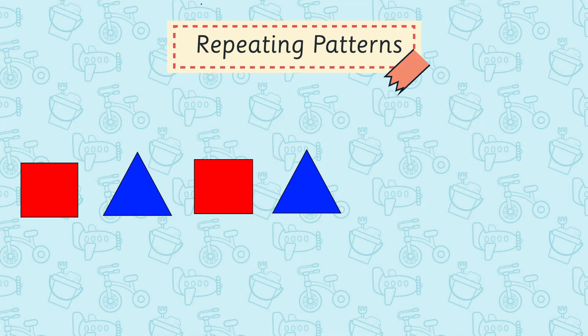Okay everyone, are you ready? We've got our first repeating pattern and it's a shape pattern. It consists of red square, blue triangle, red square, blue triangle. I'm going to give you 10 seconds now to work out which shape will come next, and if you think you know you can also figure out which shape will go after that one. Okay, here we go — time starts now.